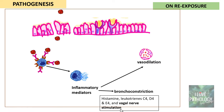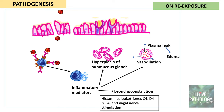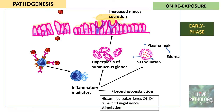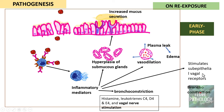The inflammatory mediators also result in vasodilatation, which leads to increased vascular permeability, increased plasma leak, and edema. The inflammatory mediators can also result in hypertrophy and hyperplasia of submucous glands, causing more and more mucous secretion in the lumen. This constitutes the early phase upon re-exposure to allergen. Bronchoconstriction is brought about by histamine, leukotrienes C4, D4, and E4, and also by stimulation of sub-epithelial vagal receptors.